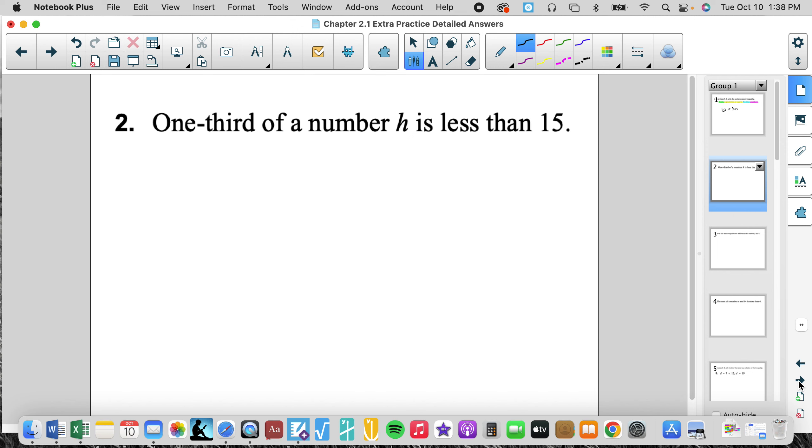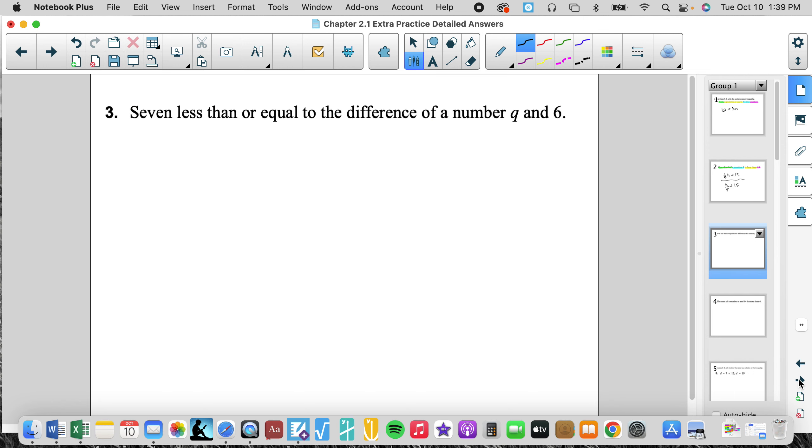One third of a number h is less than 15. So we again, less than is the inequality. One third of, of is multiplication, a number h is less than 15. That is one third of a number h is less than 15. The other way you could have had it, you could have had a third of h is less than 15. One third is times. Oh my goodness, I just found a cricket in my room. That was weird. It was a big cricket too.